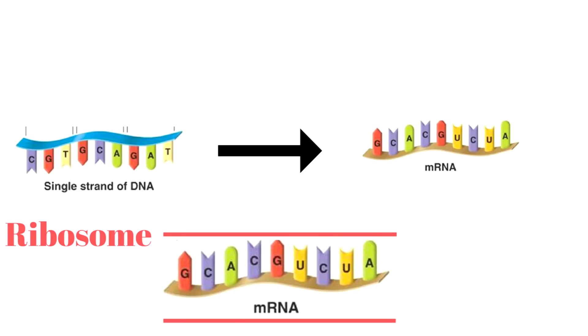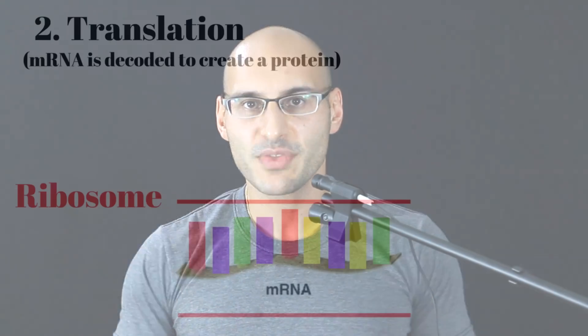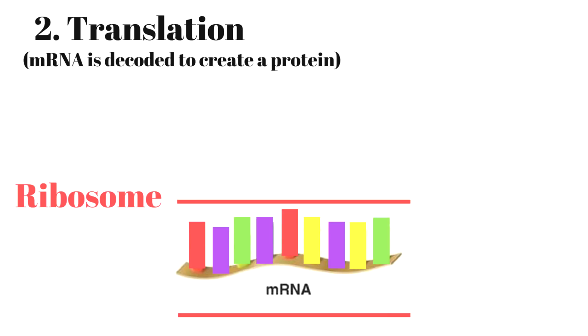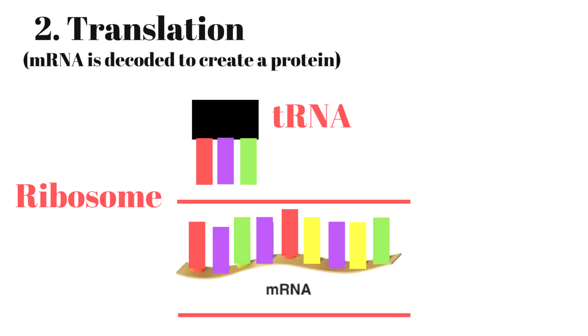Once this copy of the DNA code has been taken, we come to phase two: translation. The mRNA takes this information out of the nucleus to something called a ribosome, and this ribosome is where protein is created. How does the ribosome know the order of amino acids? The copied code explains the sequence that the amino acids need to attach in.